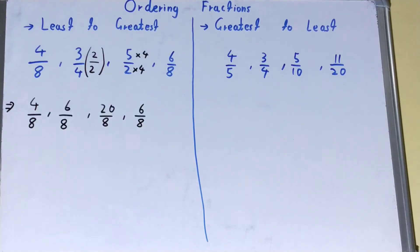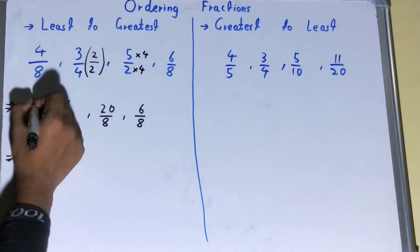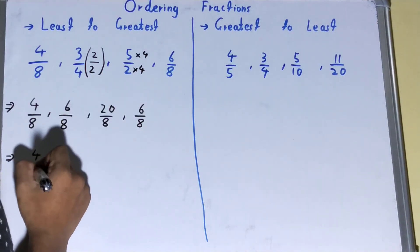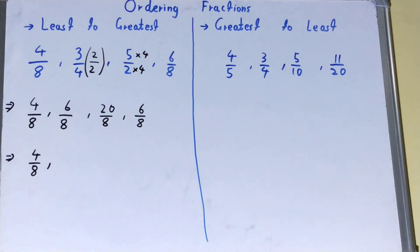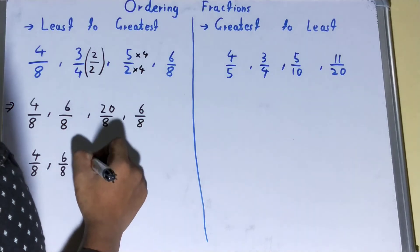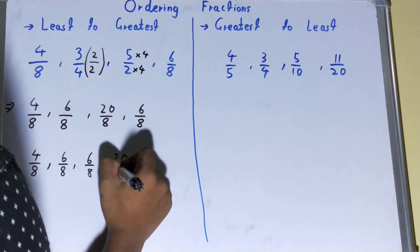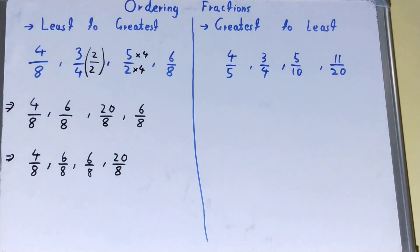Now we can compare the numerators normally. The least one is 4, so we write 4 over 8 first. Next, we have two similar values — both are 6 over 8 — so we write 6 over 8, then 6 over 8. The highest value is 20 over 8, so that goes last. That's how you order fractions from least to greatest: find a common denominator, then compare the numerators.